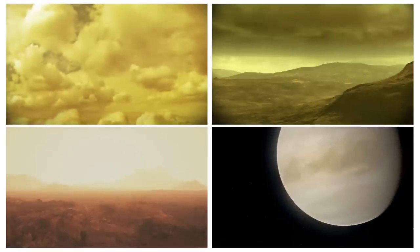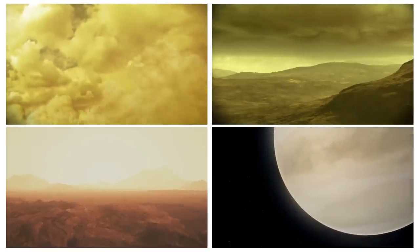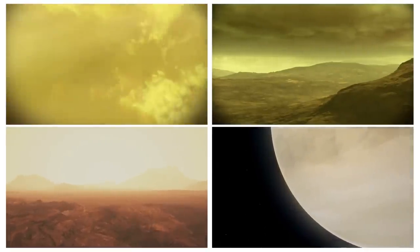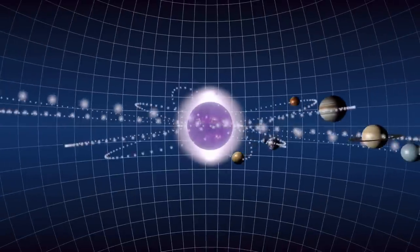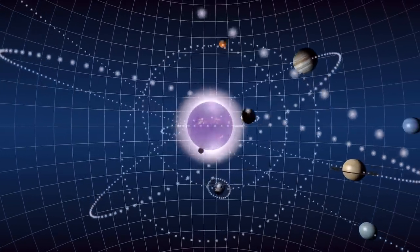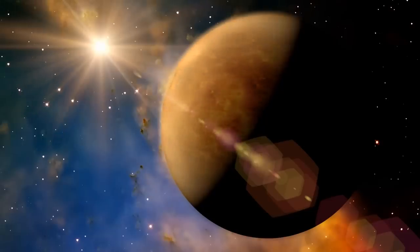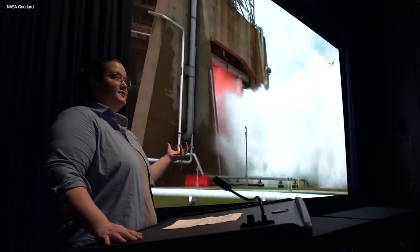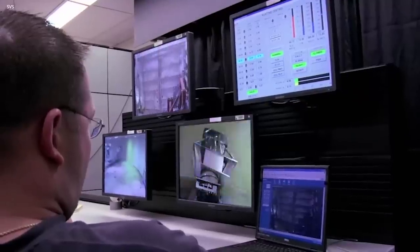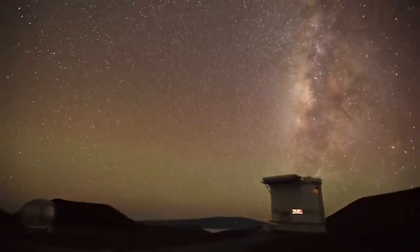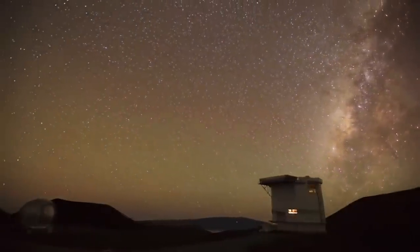It is crucial to confirm these findings because the possibility of life on another planet is a groundbreaking discovery that could change our understanding of the universe and our place in it. At the same time, though, it's important to ensure that the data is accurate and reliable before making such claims. So, scientists will continue to explore and analyze data from Venus in the hopes of confirming the presence of phosphine and discovering other potential signs of life on the planet.